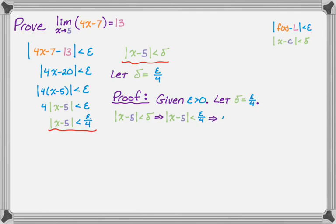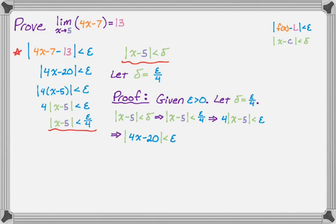Multiplying by 4 and bringing the 4 inside the absolute value, we get the absolute value of 4x minus 20. Looking back at the scrap work, the absolute value of 4x minus 20 came from simplifying the absolute value of f(x) minus L. So we break up 4x minus 20 — it's a bit of an odd step, but looking at the scrap work you know that 4x minus 20 is the result of 4x minus 7 minus 13. We've shown that if the absolute value of x minus 5 is less than delta where delta equals epsilon over 4, then the absolute value of f(x) minus L is less than epsilon.